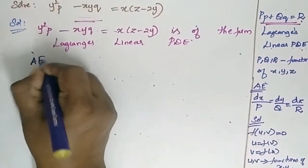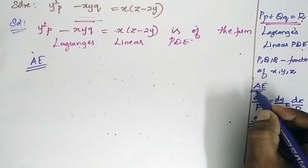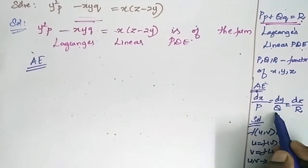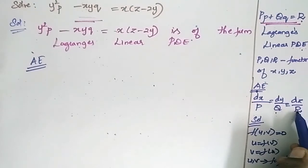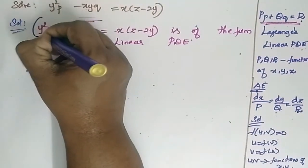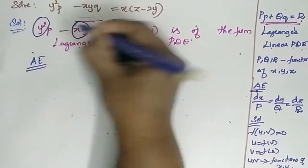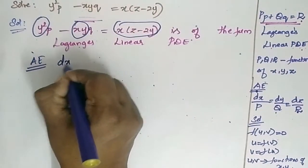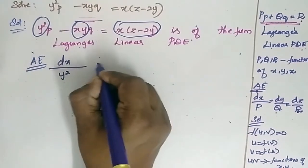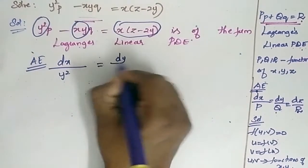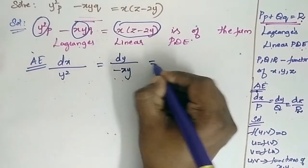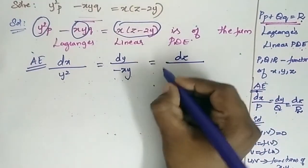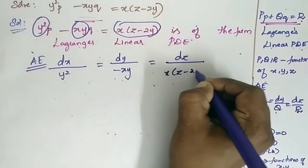Now considering the auxiliary equation for this, the auxiliary equation is dx/P = dy/Q = dz/R. So here this is my P, this is my Q, and this is my R. So my auxiliary equation is dx/y² = dy/(-xy) = dz/x(z - 2y).